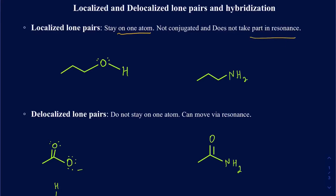and they're not going to be taking part in any of the resonance structures. For example, I have this alcohol functional group, and on the oxygen we're going to have two lone pairs. Those two lone pairs really can't go anywhere — there's no pi bond close by, or they're not allylic lone pairs for those to be conjugated. As a result, they stay on that particular oxygen, and both of those are going to be localized, and as a result, count in the hybridization.